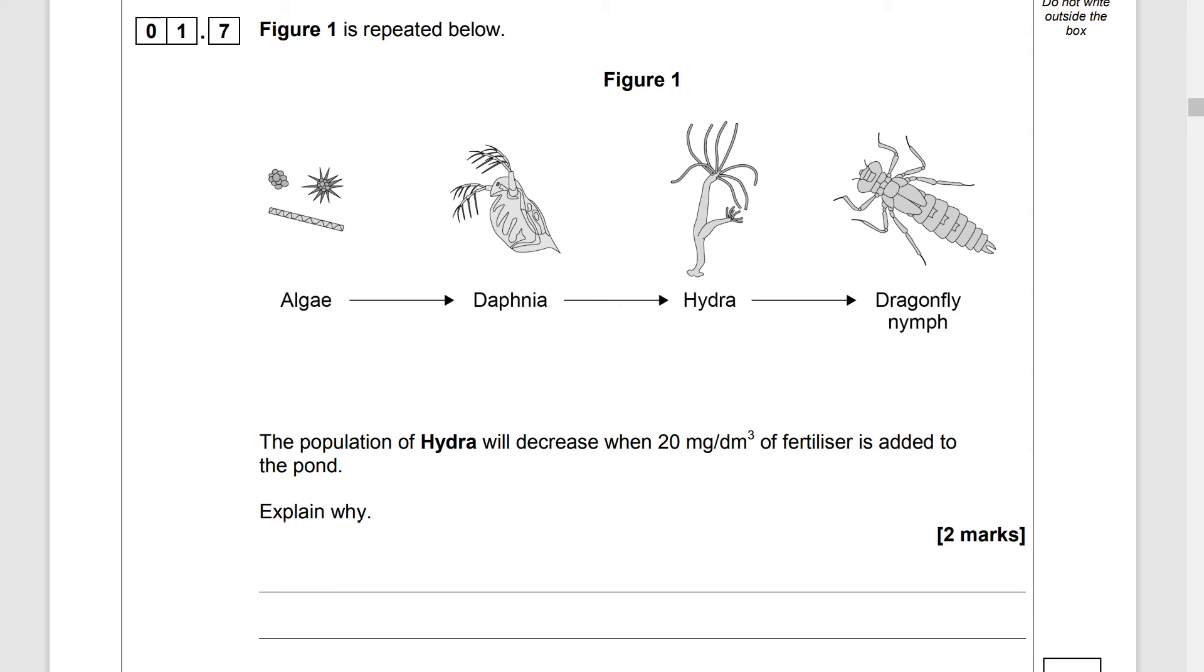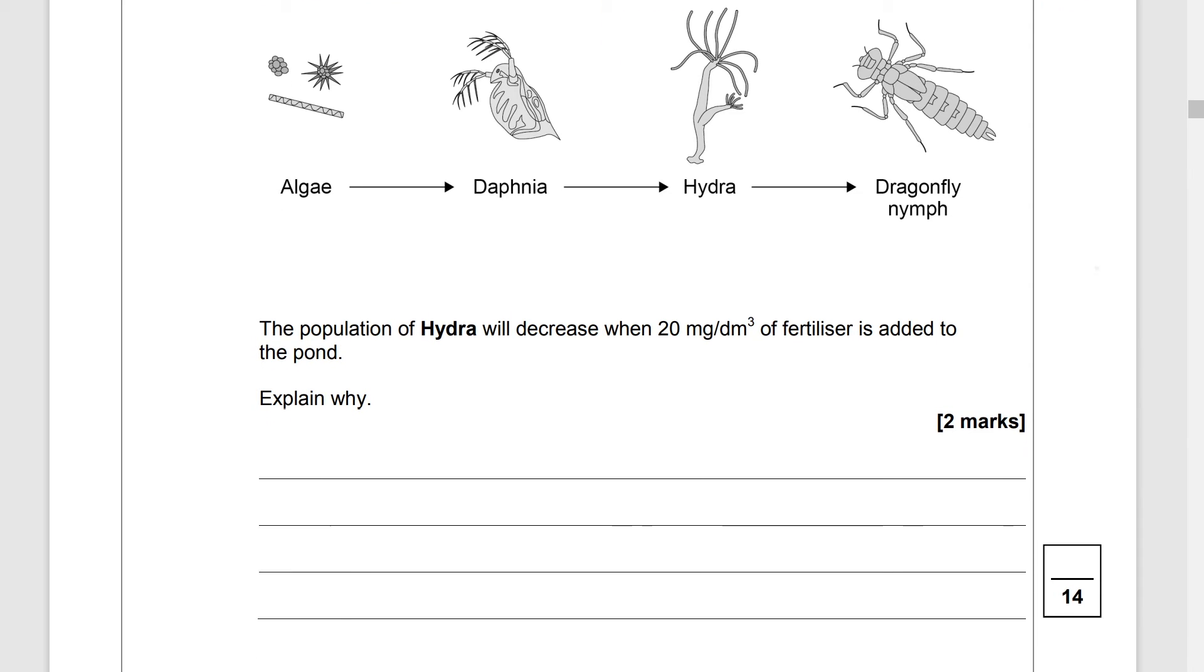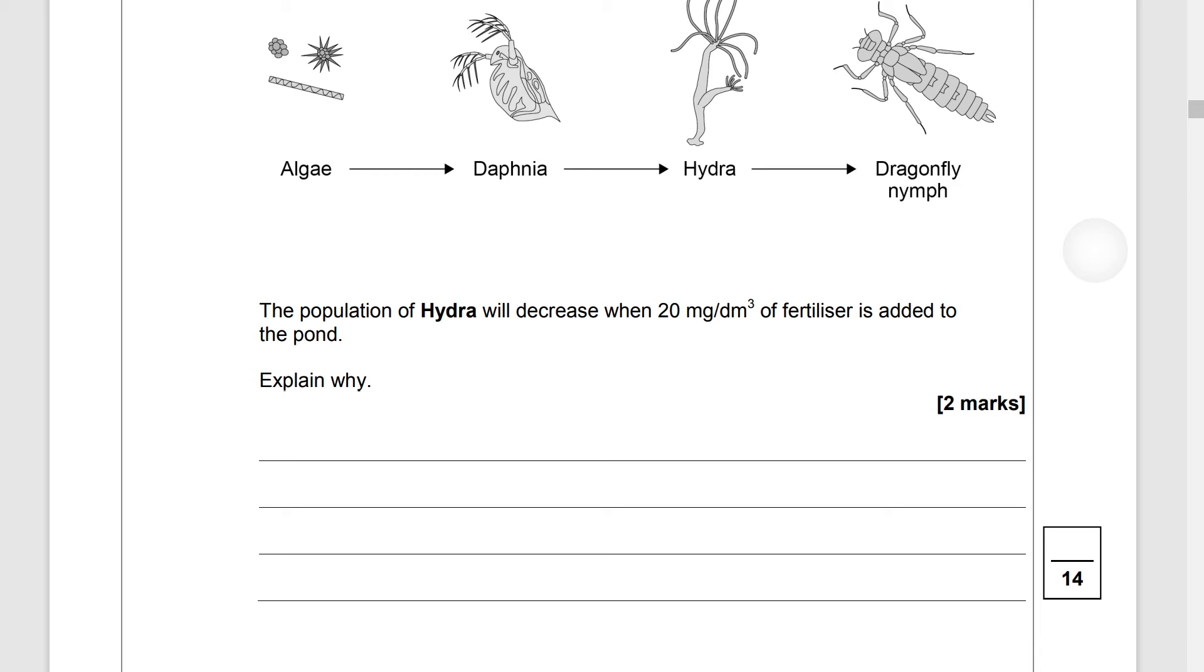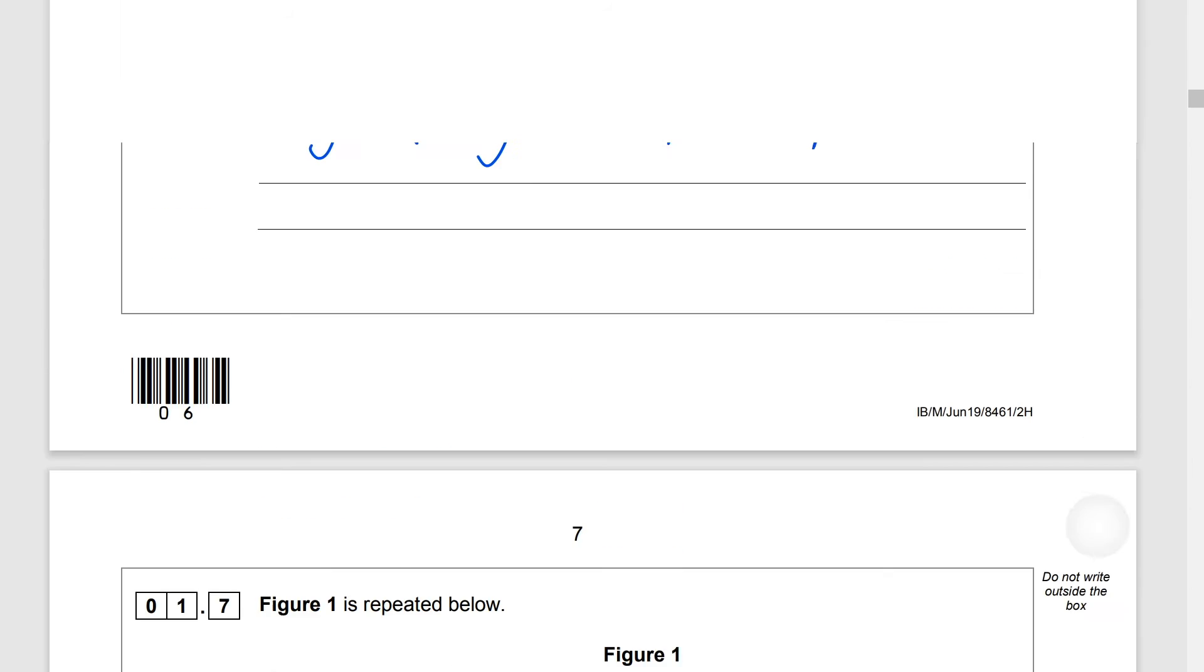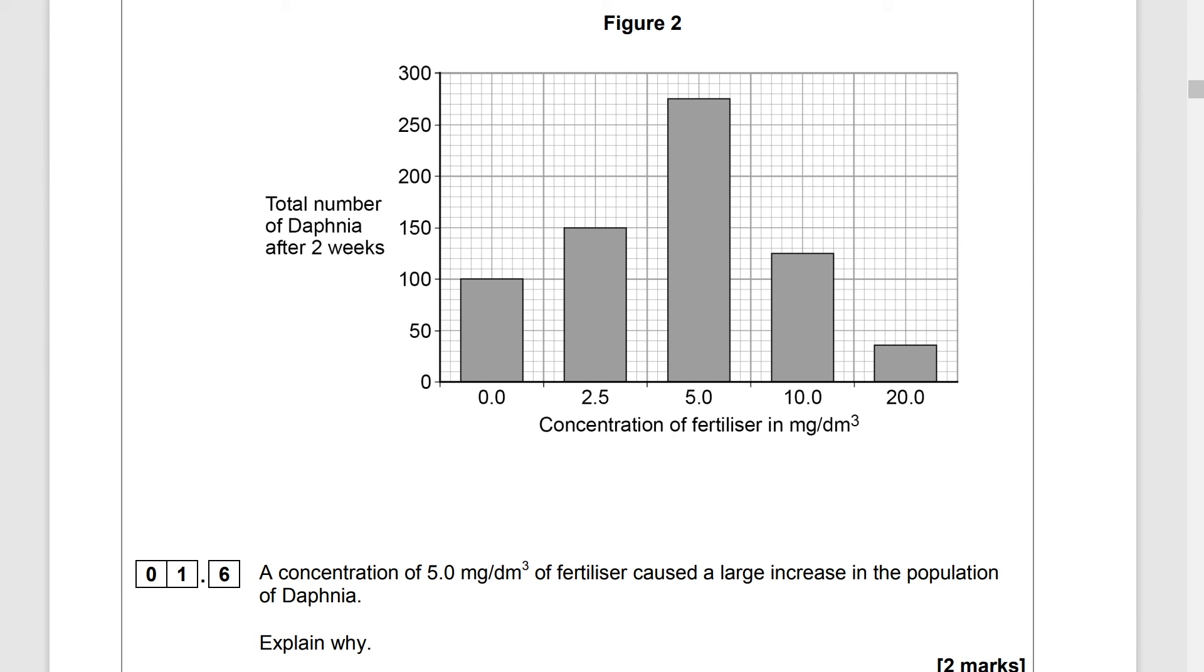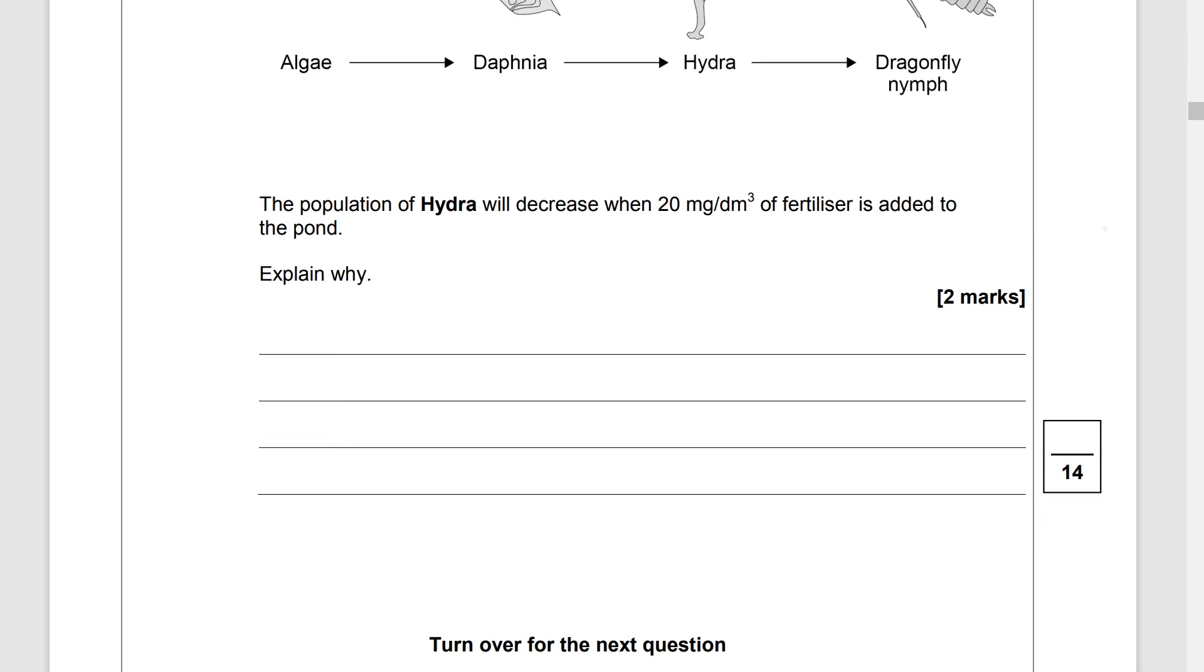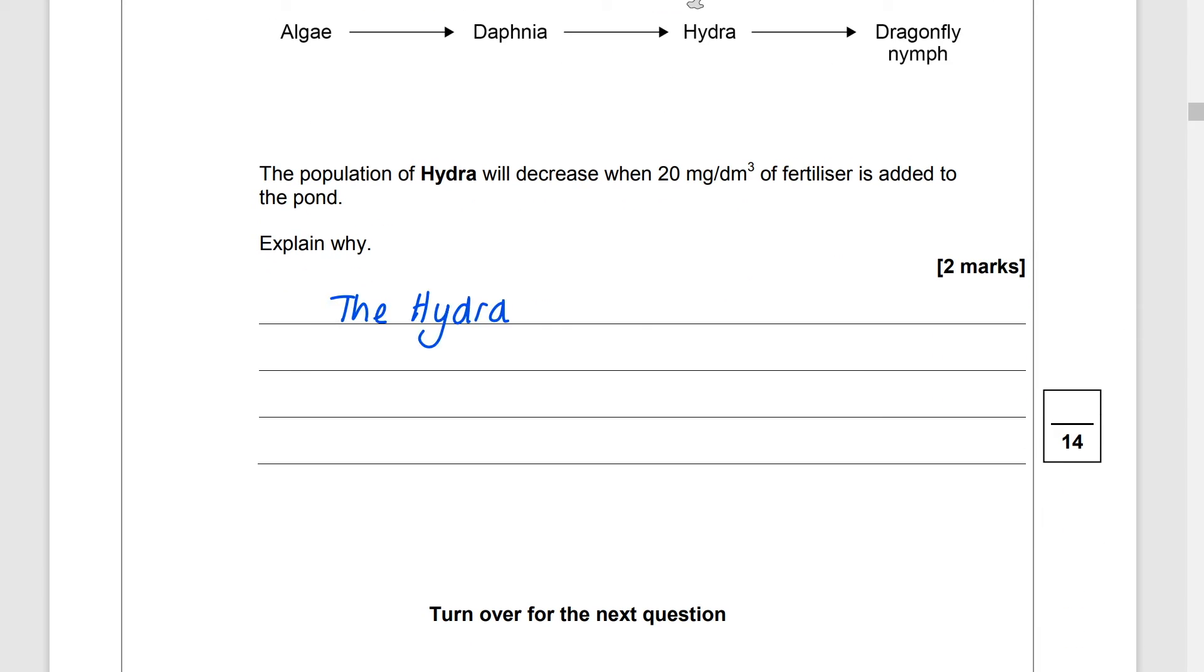Figure 1 is repeated below the population of Hydra will decrease when 20 milligrams per decimetre cubed of fertiliser is added to the pond. So we're reminded here that Hydra eat Daphnia and Daphnia feed on algae so we're gonna need to look back at the graph which shows that at 20 milligrams per decimetre cubed the Daphnia numbers have gone really low so that just means that there's less food for the Hydra to eat.